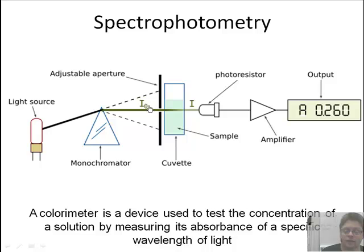This is your sample. You've got the adjustable aperture, which you can adjust the amount of light that's going through. You've got the photoresistor and the amplifier, and then you get your output in absorbance.